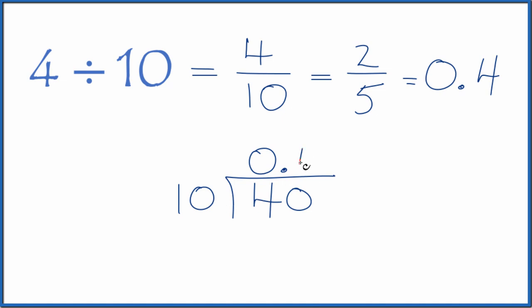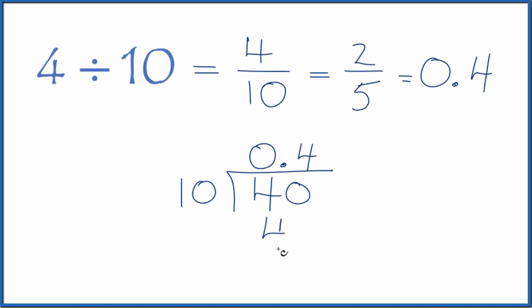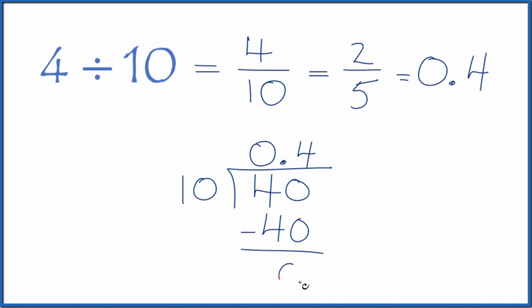Now we could say 4 times 10, that's 40, subtract, no remainder. So 4 divided by 10 is 0.4. That's what we found earlier.